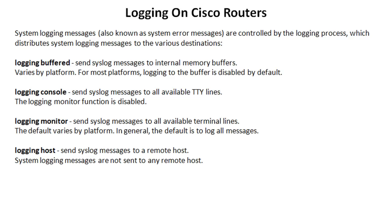I'm not going to go into explicit detail on these different destinations because there's another lesson that does that. Basically, logging buffered is your local logging on your device. On your Cisco router, if you enable logging buffered and do a show log, that's going to show the logging messages there. It keeps a history of the Syslog messages up until the buffer is full, there's a reload, or they're cleared. Logging console sends the Syslog messages to all available TTY lines — basically your console line and your VTY lines as well. Logging monitor sends it to all available terminal lines.